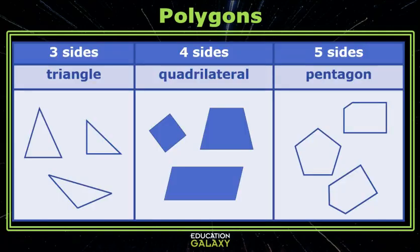You probably know the names of some polygons, but let's review. A polygon with three sides is called a triangle. A polygon with four sides is a quadrilateral and a polygon with five sides is a pentagon.